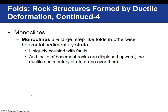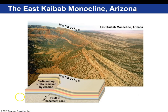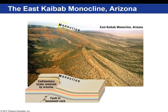A monocline is a step-like feature formed by ductile deformation. Looking at a picture of a monocline, you have relatively flat-lying sedimentary rocks, and then a fault down in the earth has offset the other rock layers — so it is like a stair step, one stair step. This is the East Kaibab monocline in Arizona. You can see the elevated area and then you step down to the flat area.